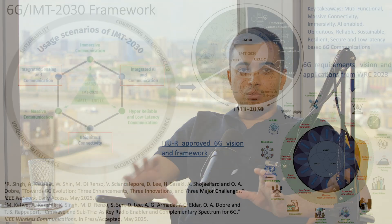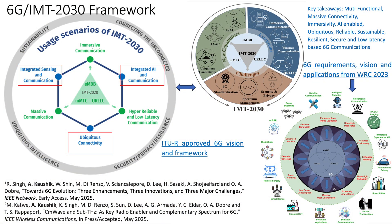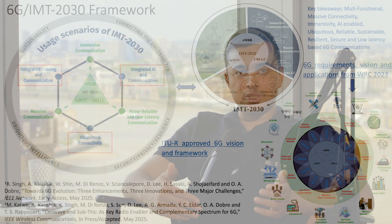In the IMT 2030 framework — the 6G framework — we have three enhanced capabilities in addition to what we had in our triangular framework of IMT 2020, which we called 5G. In 6G, we have the additions of integrated sensing and communication, integration of AI and communication, and ubiquitous connectivity.